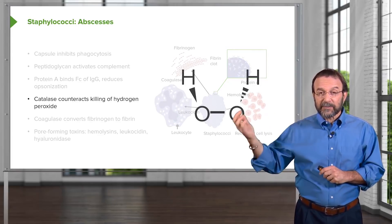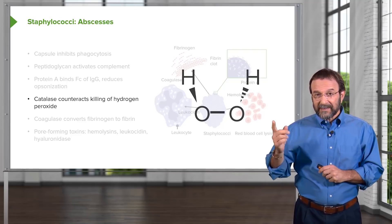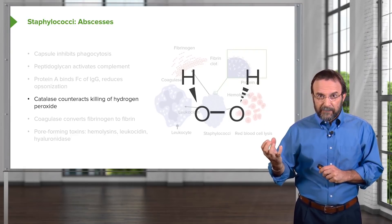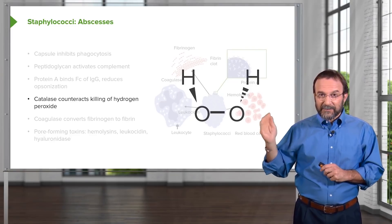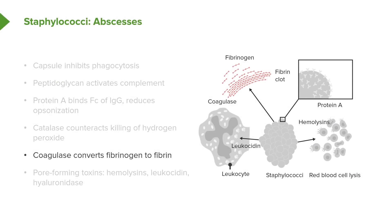Catalase, produced by staphylococci, cleaves hydrogen peroxide (H₂O₂) — which is produced by macrophages to destroy bacteria. The bacteria make catalase to evade this destruction. Staphylococci also produce coagulase, which converts fibrinogen to fibrin, helping make a clot that surrounds the boil and isolates bacteria from the immune response. Additionally, they make pore-forming toxins like hemolysins, leukocidins, and hyaluronidases that digest the extracellular matrix — all to help the bacteria spread and avoid host defenses.